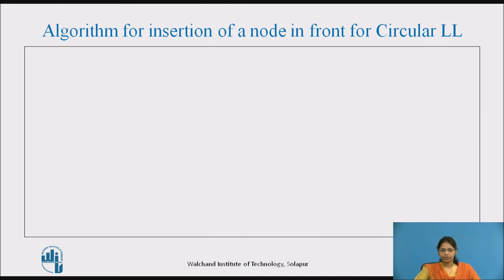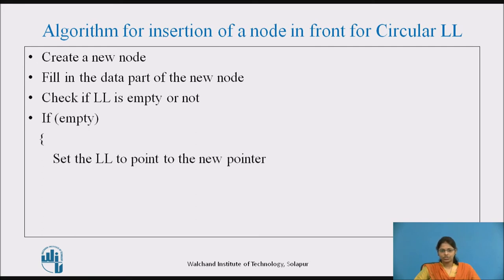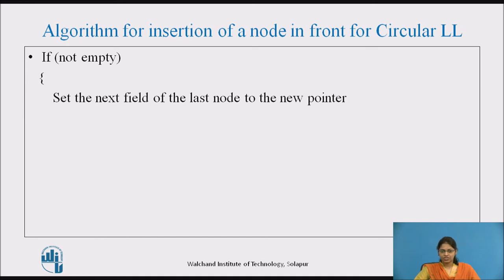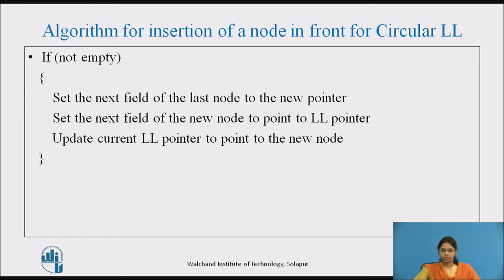Algorithm for insertion of a node at the beginning of a circular linked list: First, create a new node and fill in the data part. Check if the linked list is empty. If empty, set ll to point to the new node and set the next of ll to point to ll itself. If not empty, set the next field of the last node to the new node, set the next field of the new node to the ll pointer, and update the ll pointer to point to the new node.